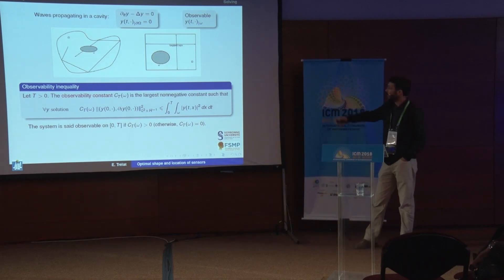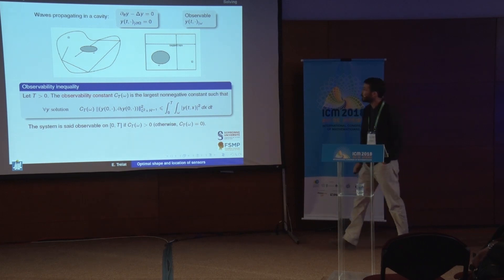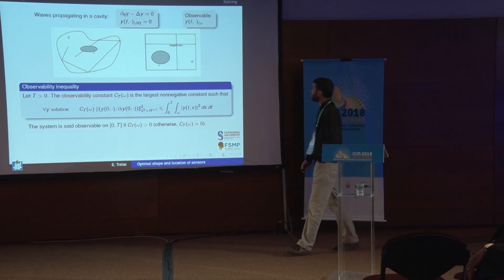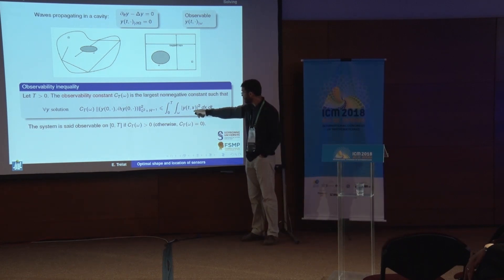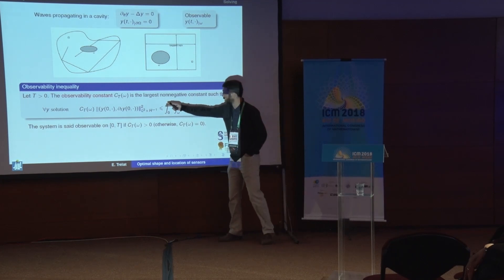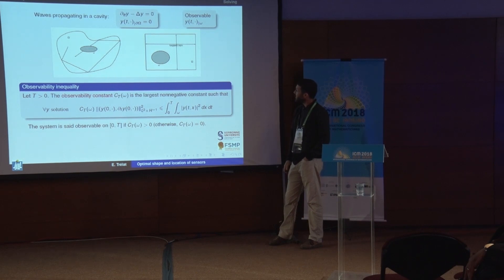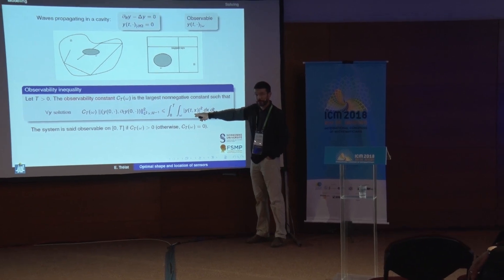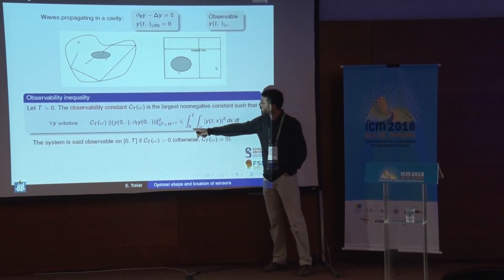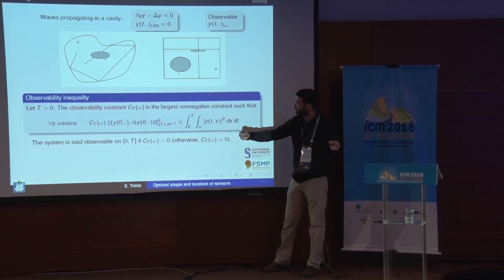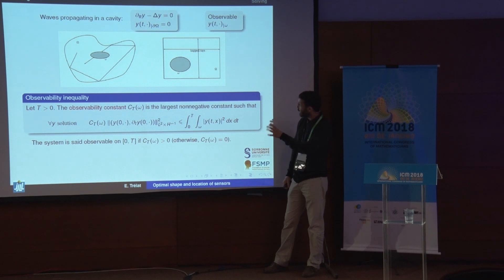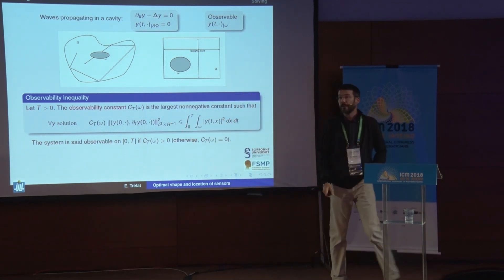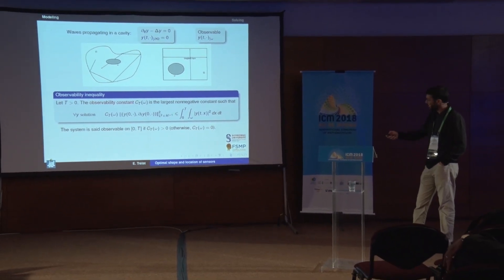It is well known that we say the wave equation is observable within a time of observation, capital T, whenever there exists a positive constant — called the observability constant C_T of omega — such that for any solution of the wave equation, you have a uniform inequality. This inequality says that the energy of the localized observation, which is the integral over time zero to T over the subset small omega of the square of the wave solution, should be greater than or equal to the norm of the initial solution, with a constant.